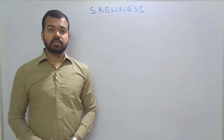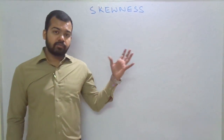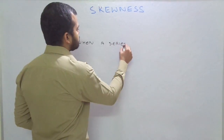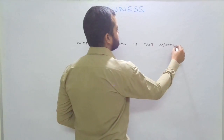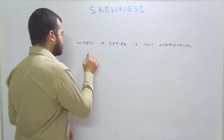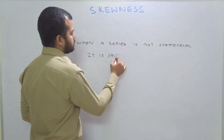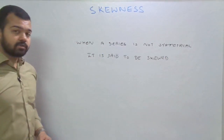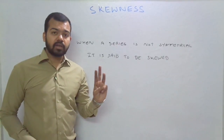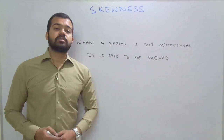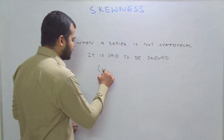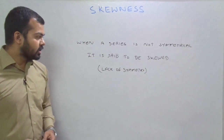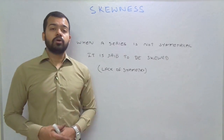In the previous video, we had discussed about measures of central tendency and measures of dispersion. Here we will discuss the definition of skewness. When a series is not symmetrical, it is said to be skewed. It means whenever we have a series, the values of mean, median and mode are different when the series is not symmetrical. In other words, lack of symmetry is known as skewness, and an asymmetrical series is also known as a skewed series.